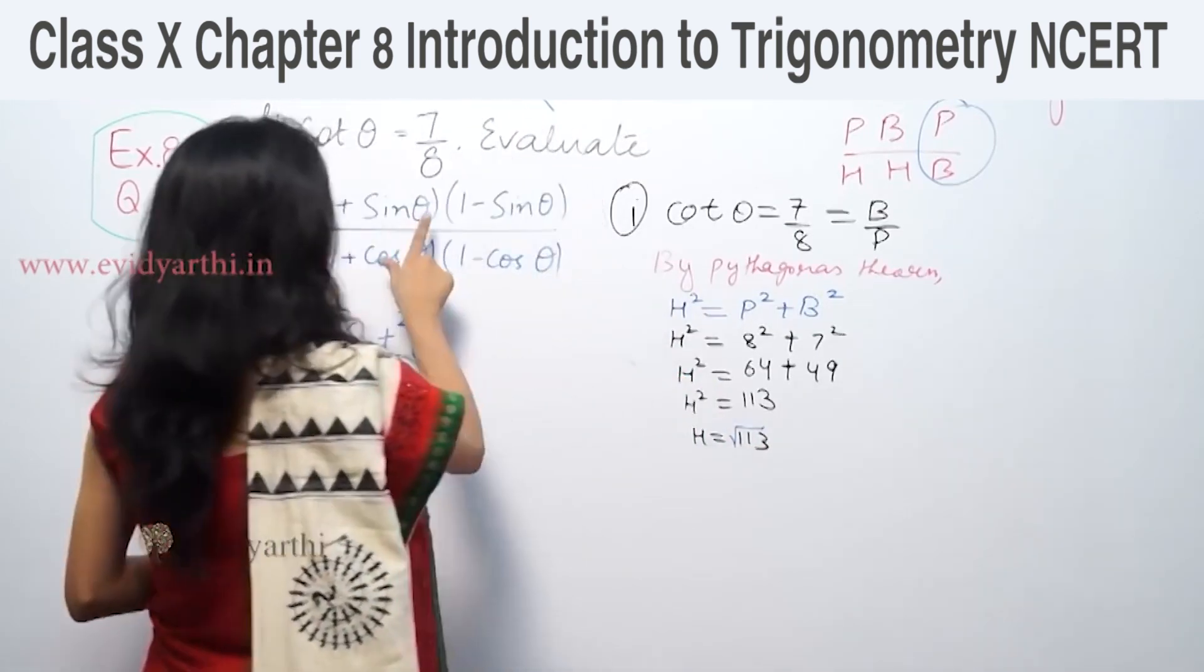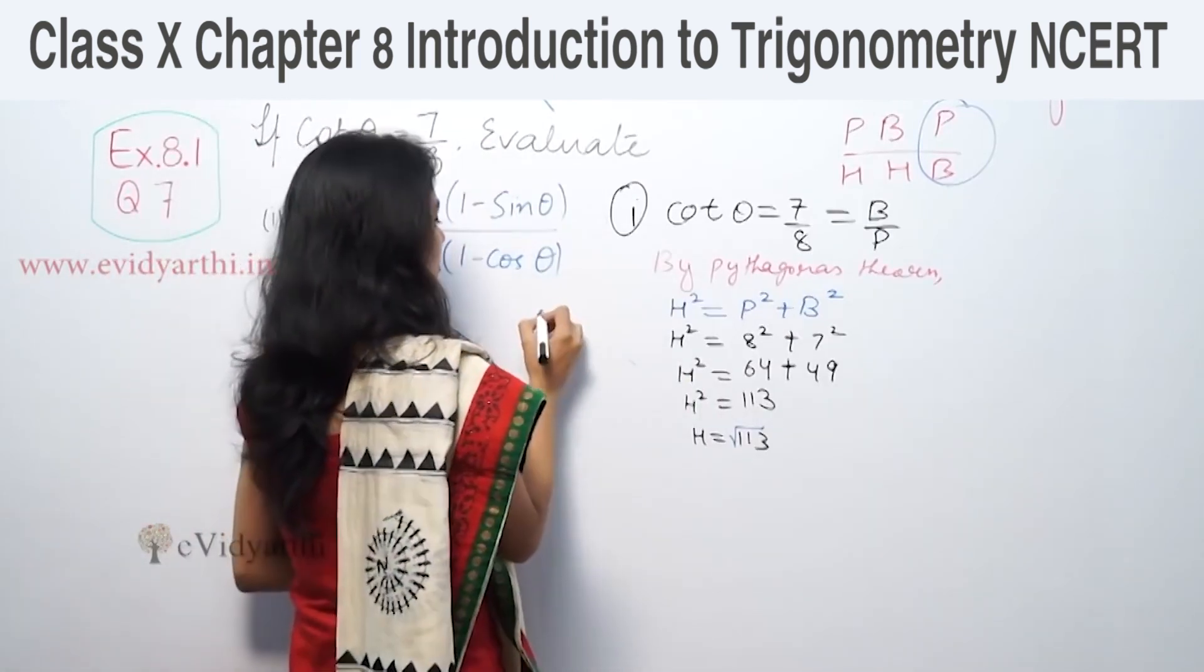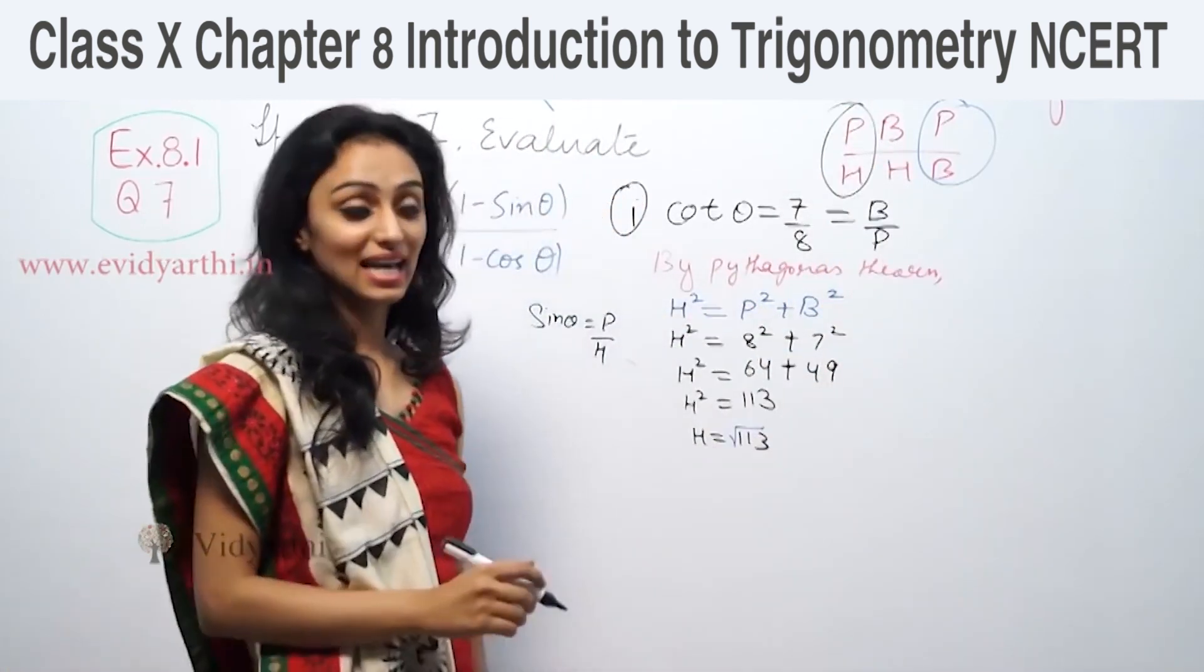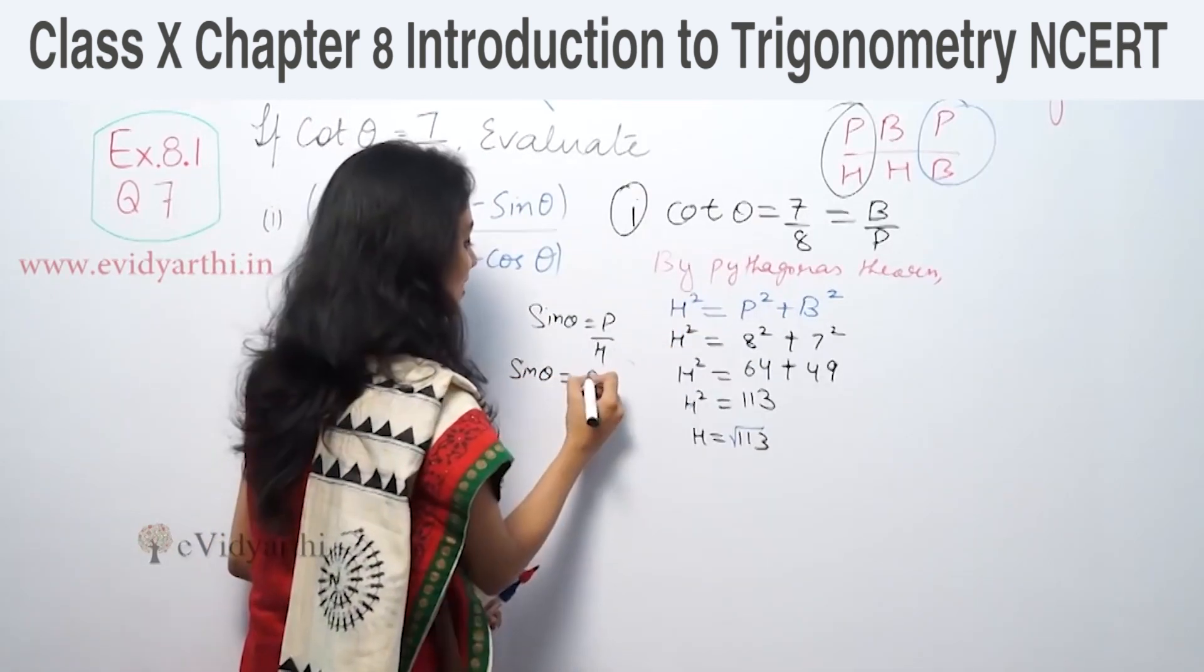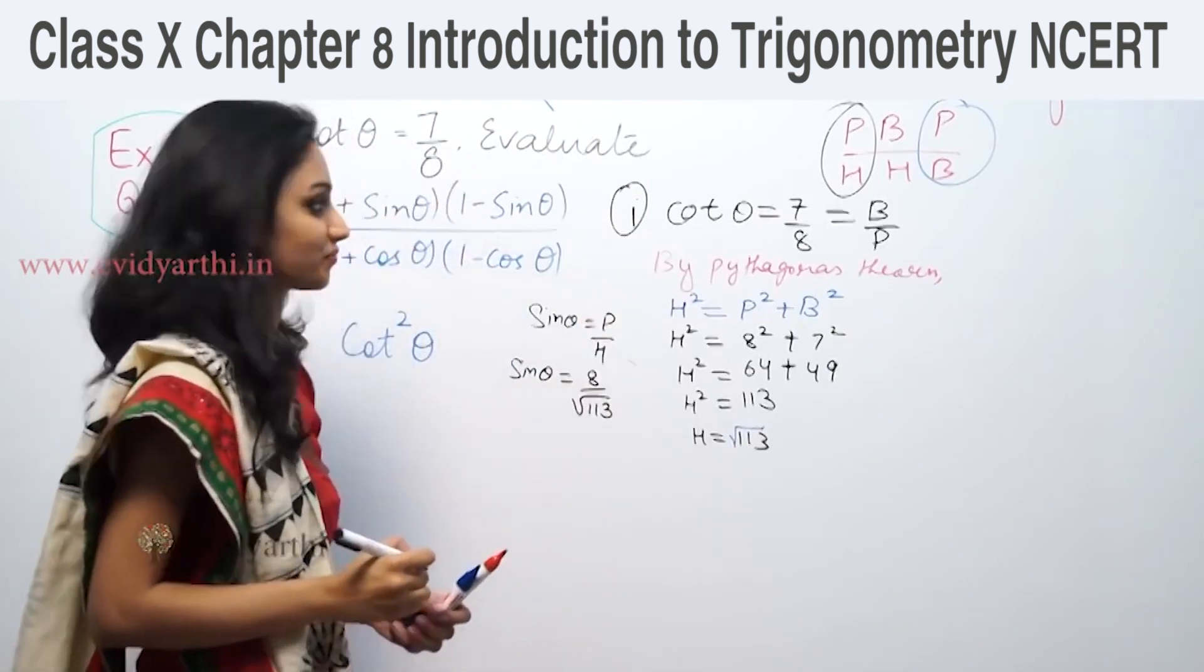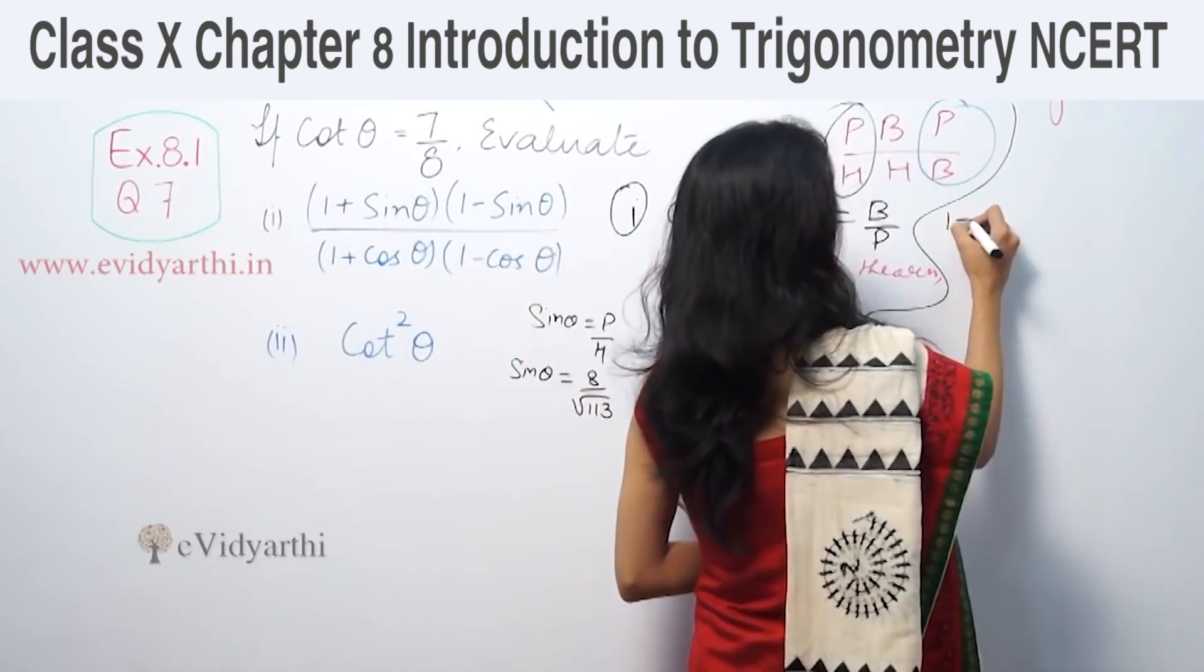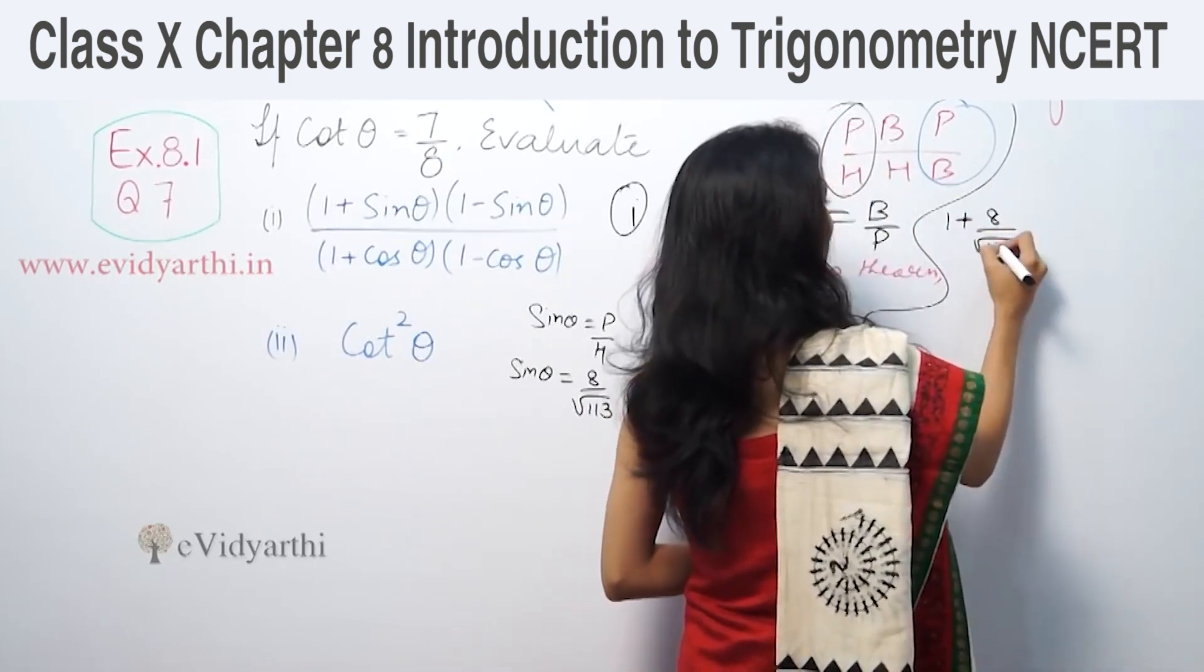So 1 plus sin θ - sin θ is equal to p by h, which means sin θ equals perpendicular over hypotenuse, that is 8 over √113. So 1 plus sin θ equals 1 plus 8 upon √113.